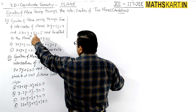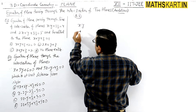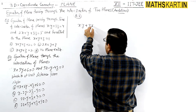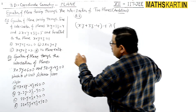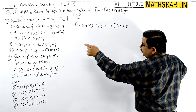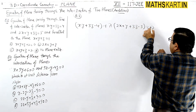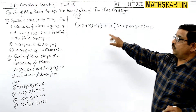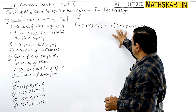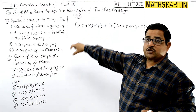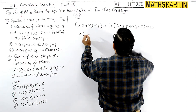Let's take the line of intersection of two planes. This is question number 3. The first plane is x minus y plus 3z minus 4, plus lambda times the second plane, which is 2x plus y plus 3z minus 5, equals 0. This is our required plane, which is parallel to the given plane.